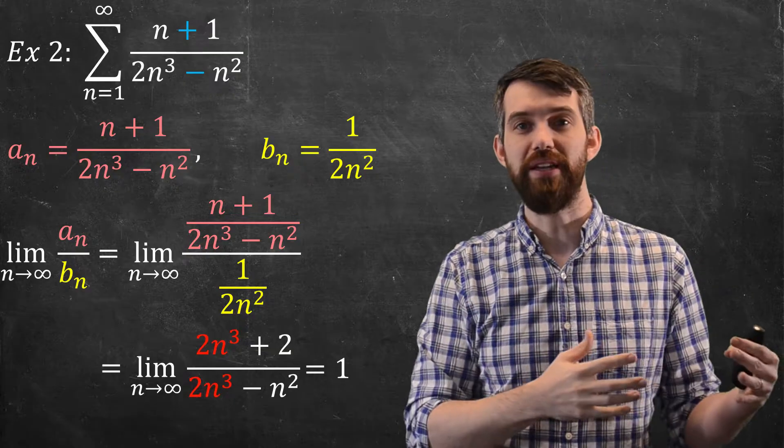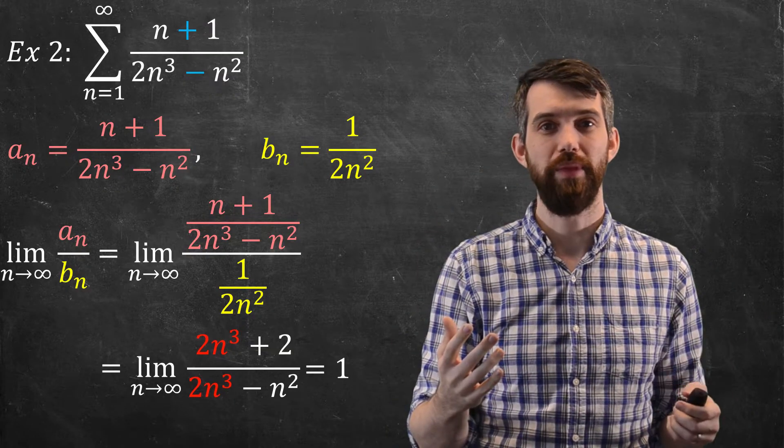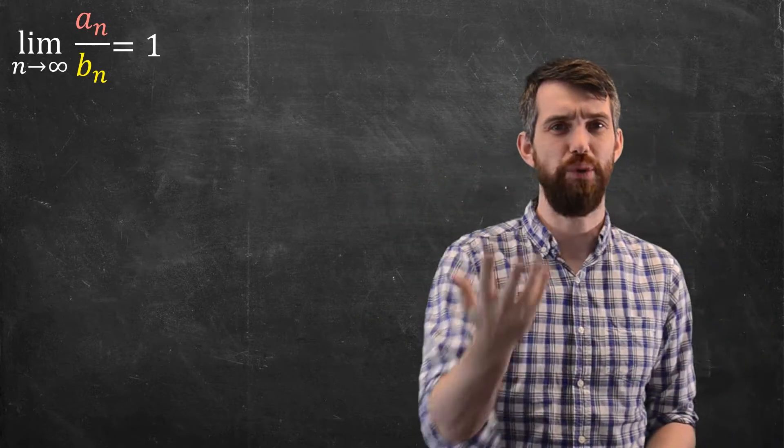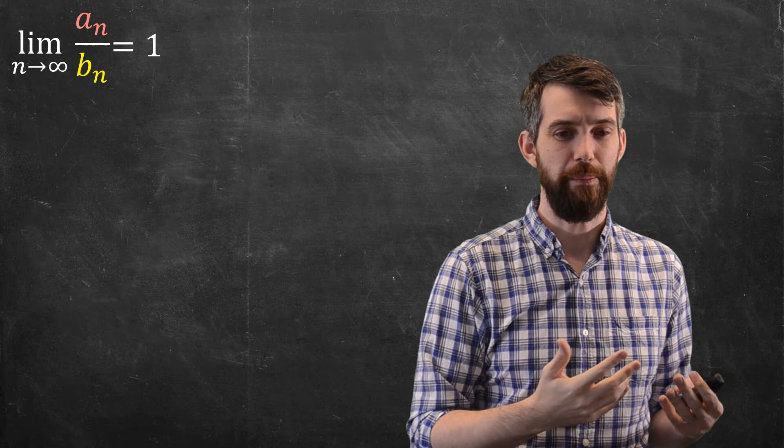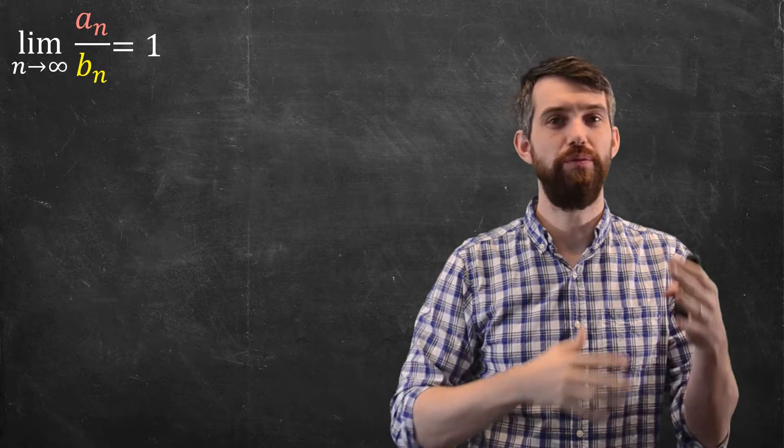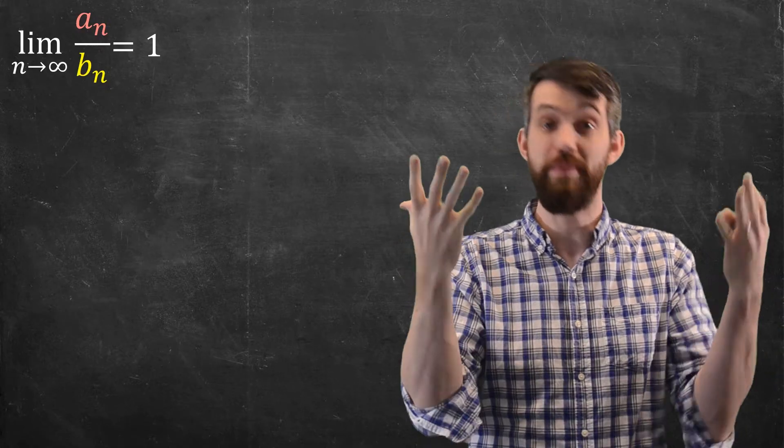So this limit of the quotient of my terms is nothing but 1. Well, what can we do with that? If I have this fact, this limit of this quotient is equal to 1, how is this helpful? Now, if I didn't have the limit sign there, you could pull up the b_n and you say a_n was equal to b_n, in which case the two series would be identical.